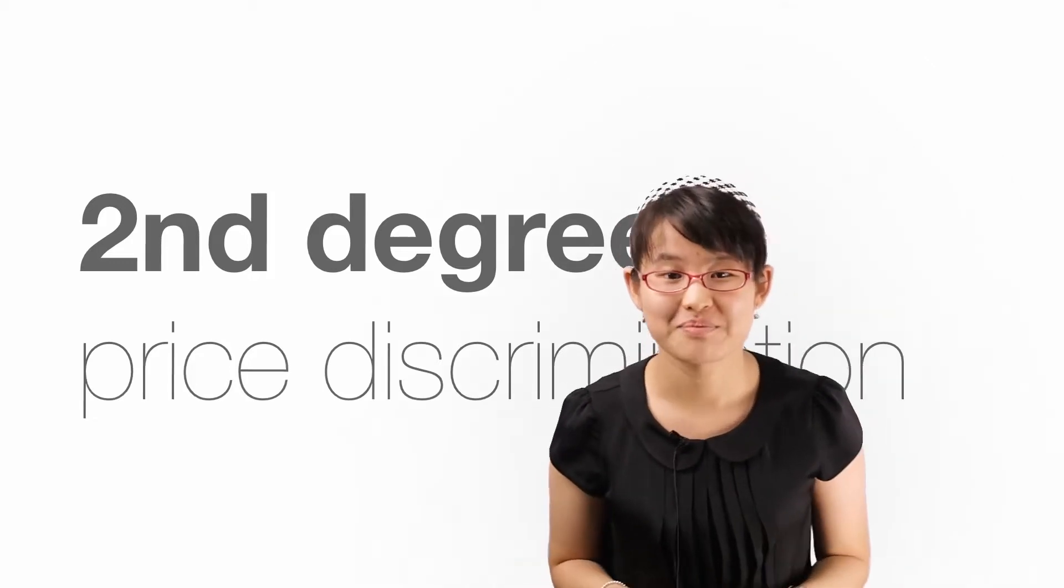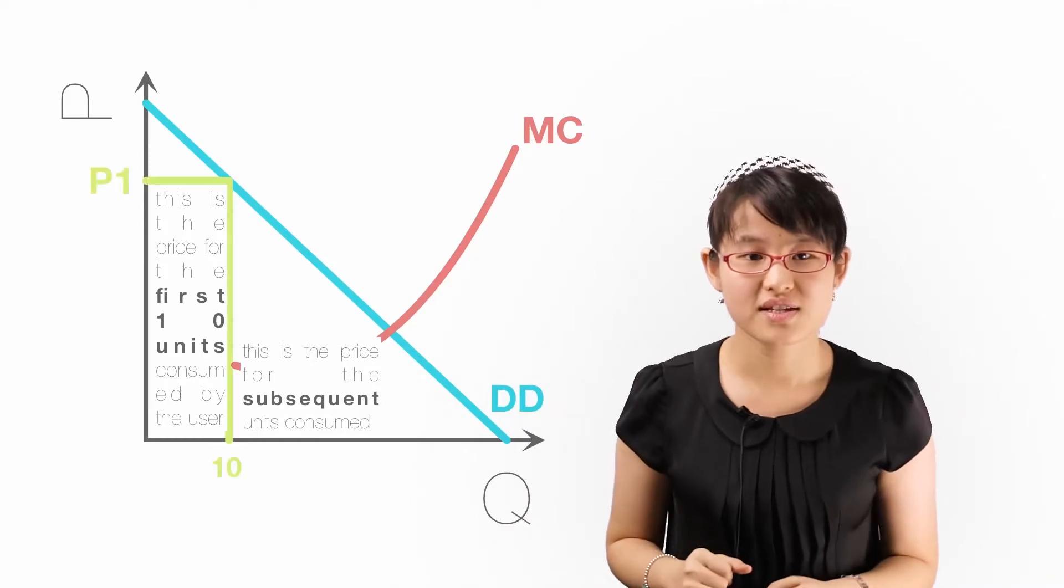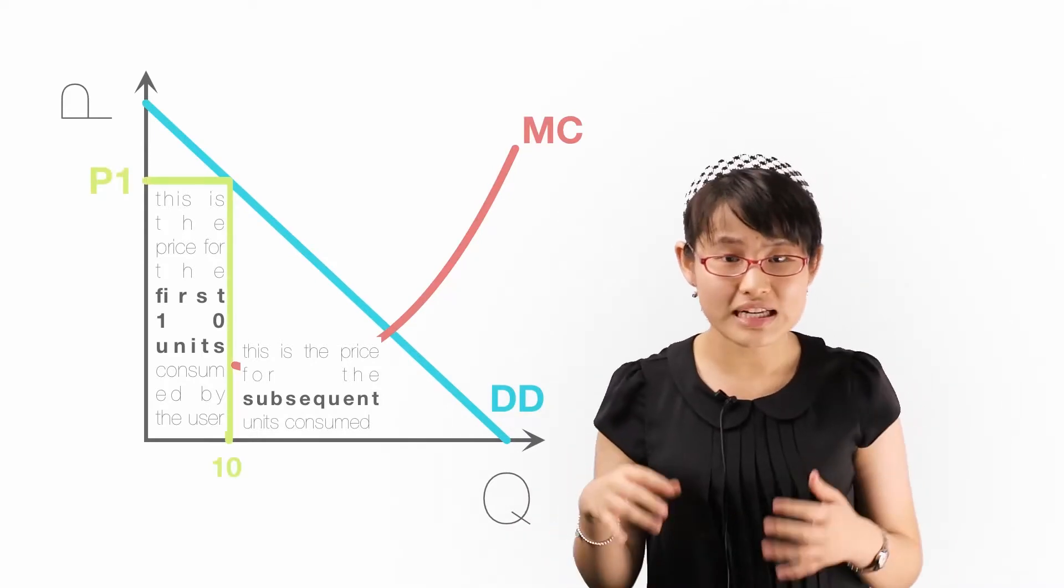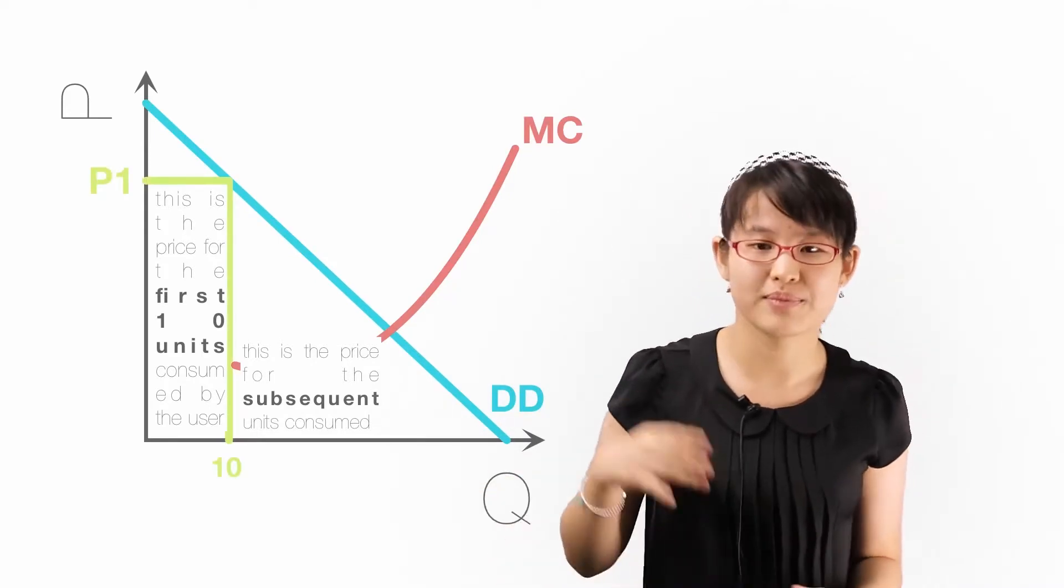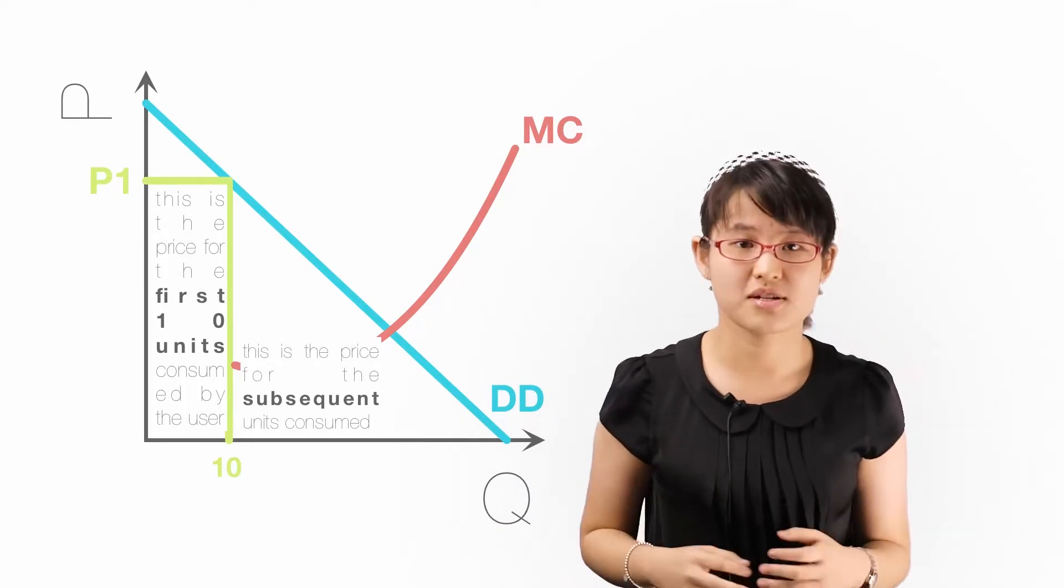For example, electricity companies in some countries charge a high price for the first so many kilowatts. This is the amount of electricity that would typically be used for lighting and running electrical appliances. In other words, the uses for which there is no substitute fuel.